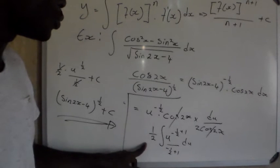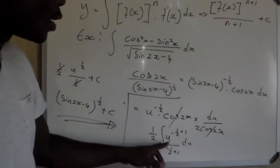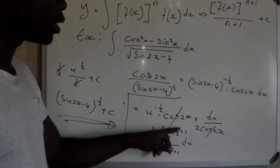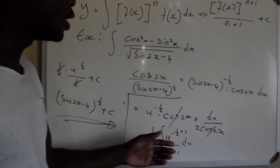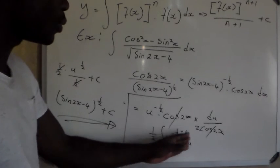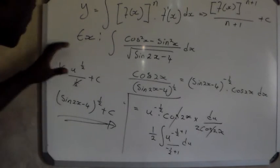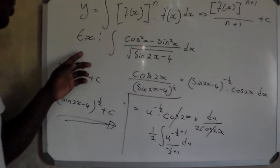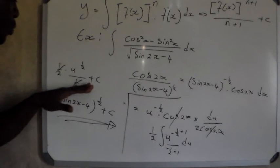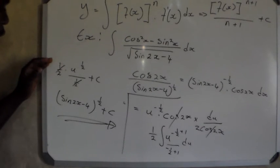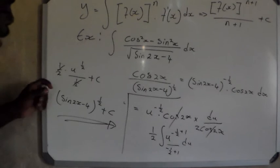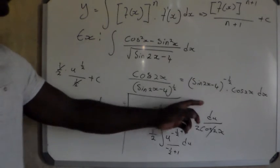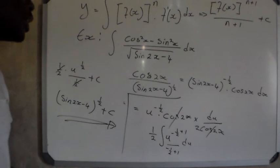After cancelling, we remained with one-half times the integral of u to the power negative one-half. Applying the standard integral, we add 1 to get one-half times u to the power one-half, divided by one-half. These cancel to give 1, and our final answer is obtained by substituting back u equals sine 2x minus 4 to the power one-half, plus c. This is how we integrate expressions in the form of f of x to the power n multiplied by the derivative of f of x.